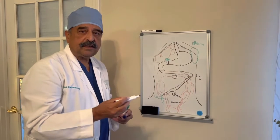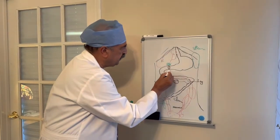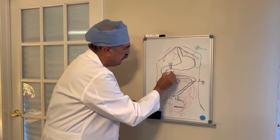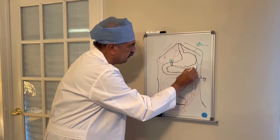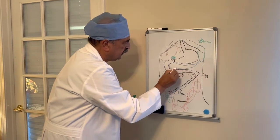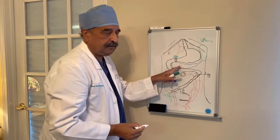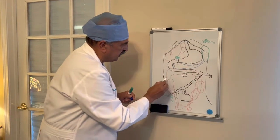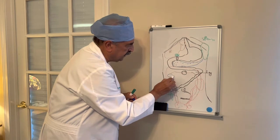Another organ I want to show is the pancreas. The pancreas is in between the duodenum here — this is the head of the pancreas and this is the tail of the pancreas, which goes towards the spleen. It's a very important organ. Another important organ is the adrenal gland, which is above the kidney on both sides.